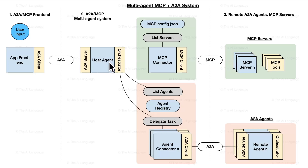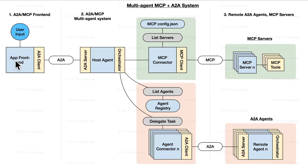We'll build this host agent with an orchestrator. The host agent will use an MCP connector to connect to the MCP branch, and it will connect to the A2A branch using tools that list all available agents from the agent registry, allowing it to delegate tasks to those agents. Once we have done this, we'll have our complete multi-agent system. We'll also build a minimal frontend where you as the user can send a query, it passes to the host agent, and the host agent does all the orchestration — using all MCP tools and A2A agents to complete your task.